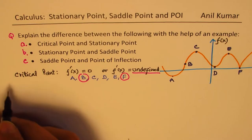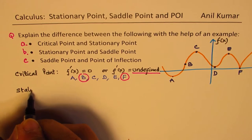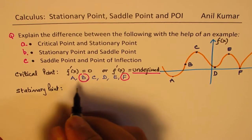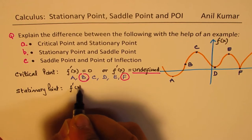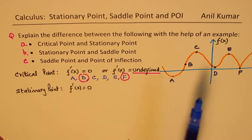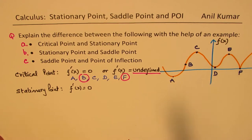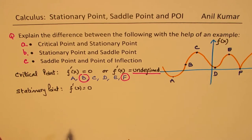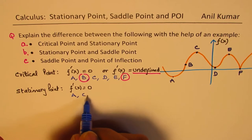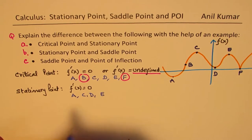Now let's see what is a stationary point. When I say stationary point, I mean that the first derivative is equal to zero — that is the primary condition. Out of the points given to us, A, C, D, and E are the stationary points in this particular case.